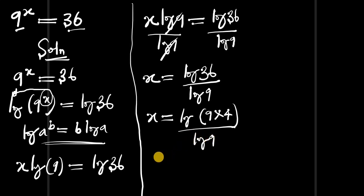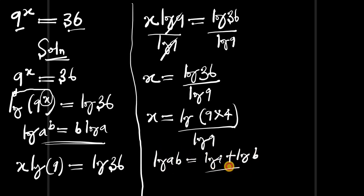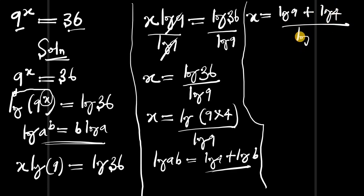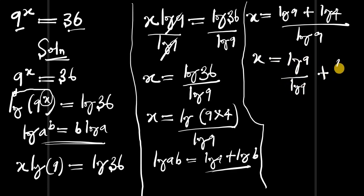Using the identity log(ab) = log(a) + log(b), we get x = [log(9) + log(4)] / log(9). We then distribute log(9) in the denominator, so x = log(9)/log(9) + log(4)/log(9). Since log(9)/log(9) = 1, we have x = 1 + log(4)/log(9).